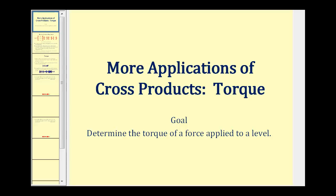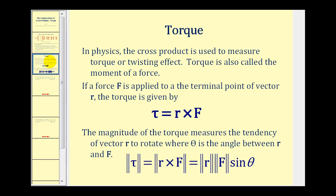Welcome to a video on torque, an application of cross products. You've probably heard of a torque wrench, which is a wrench that tightens bolts or screws to a certain specification. In physics, the cross product is used to measure torque or twisting effect. Torque is also called the moment of a force.